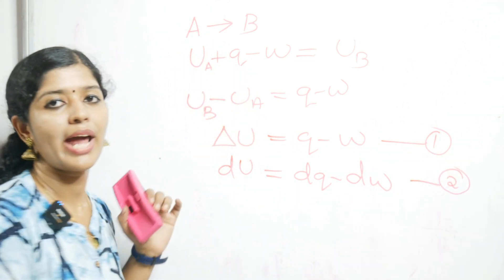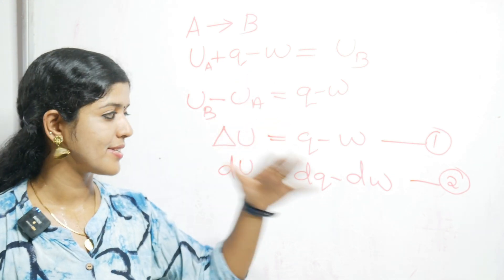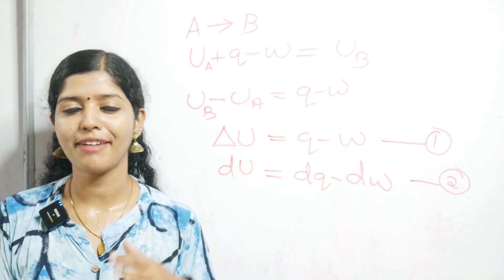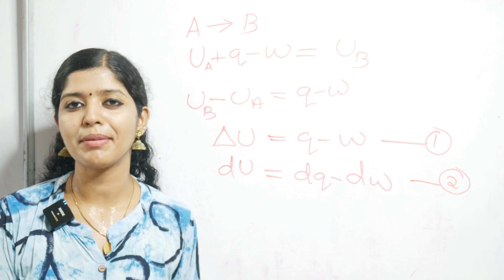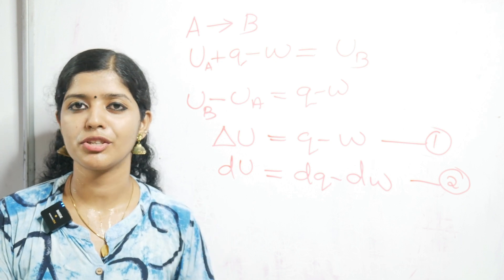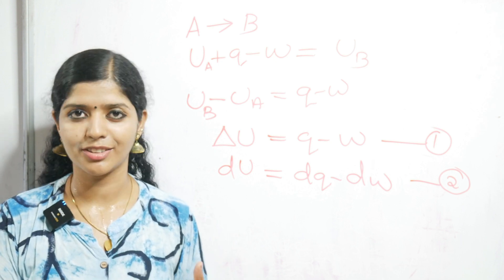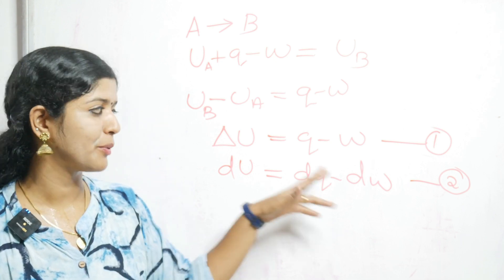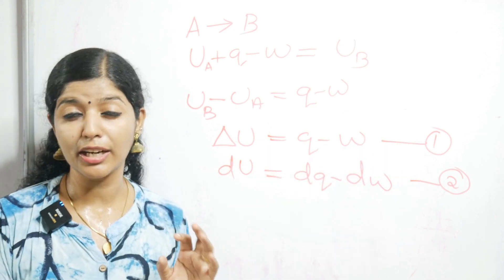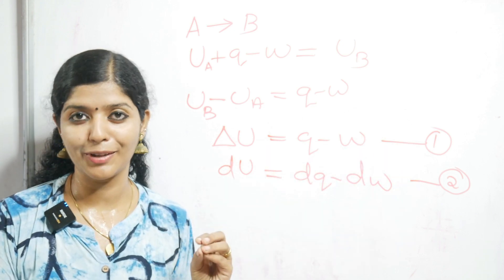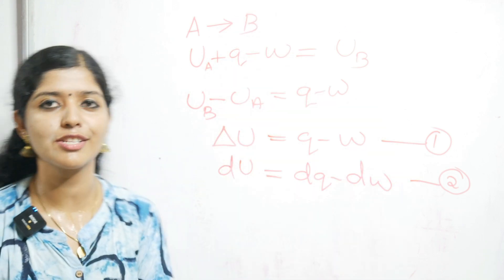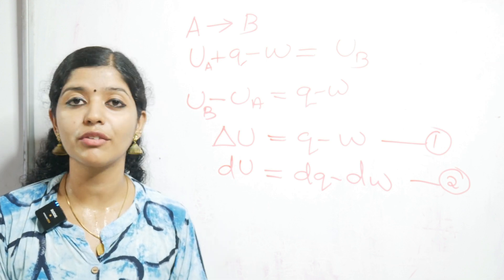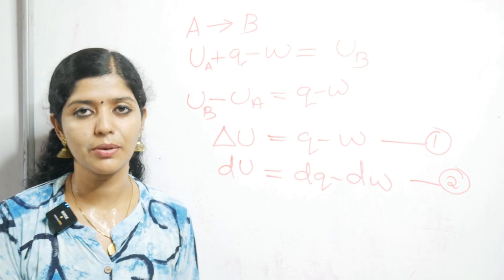In an exam, if you have so many equations numbered like 1, 2, 3, 4, 5, the examiner will have a good impression of you and they won't cut many marks. So always make a habit of numbering the equations — but only the important ones. Not every equation needs a number, just the important ones.